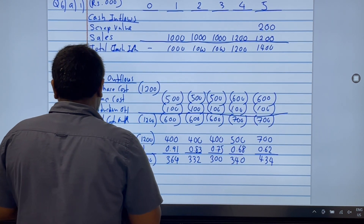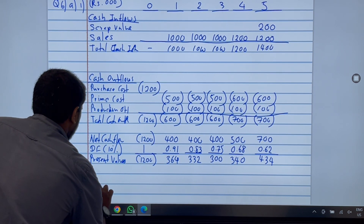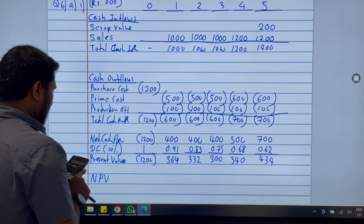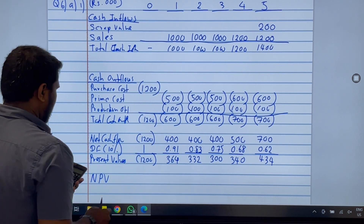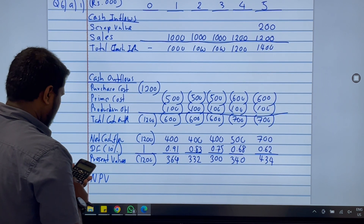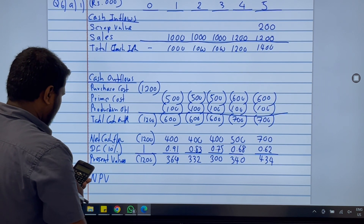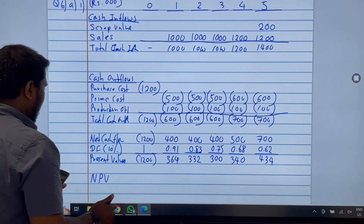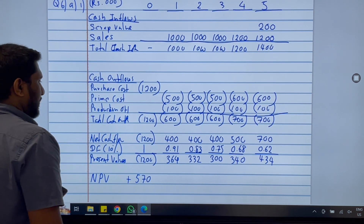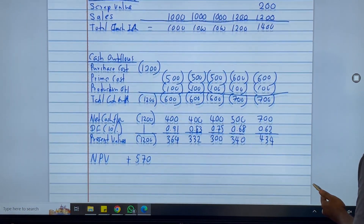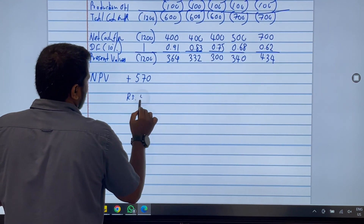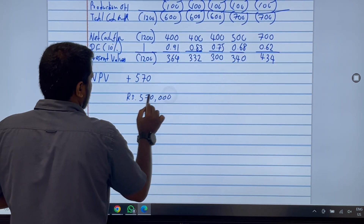Now let's calculate the NPV: −1,200 + 364 + 332 + 300 + 340 + 434 = +570. So the NPV is rupees 570,000 positive.